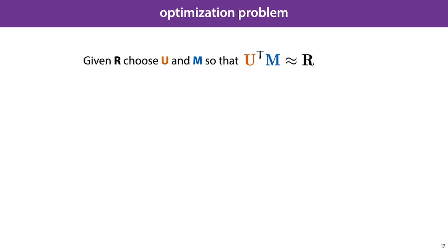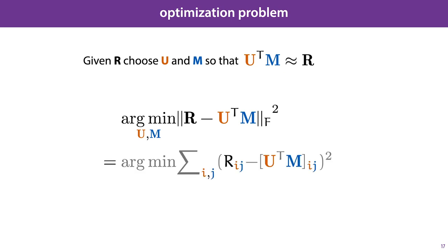And this brings us to our optimization problem. We are given a matrix R of recommendations, and we are to choose embedding matrices U and M so that their product is close to R. To turn this into a problem we can solve, we need to make precise how to measure how close together two matrices are. The simplest option is to measure the Frobenius norm of the difference between the two matrices. This sounds complicated, but it's just the same as the vector norm, but applied to matrices. We sum the squares of the elements of the matrix together and take the square root of the sum.